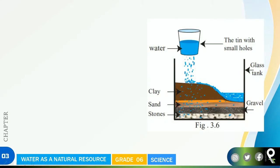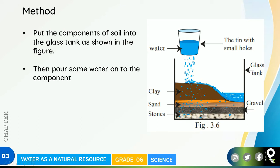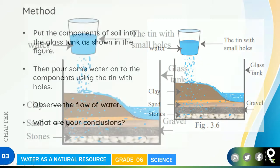We are making an artificial setup of exactly what we saw. Put the components of soil into the glass tank as shown in the figure: put clay on top, then sand below that, then gravel, and finally stones. Then pour some water onto the components using the tin with holes to make artificial rain. Observe the flowing water - see how it flows down and gets collected.